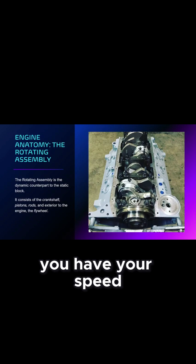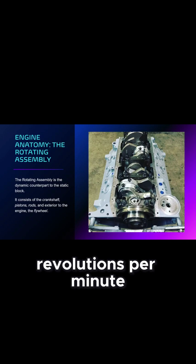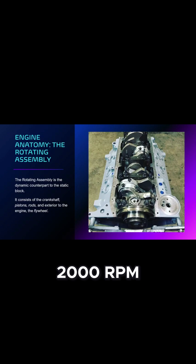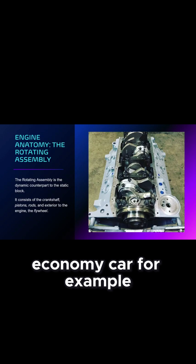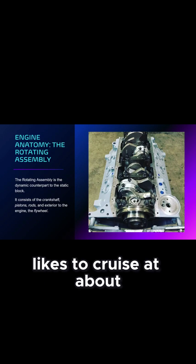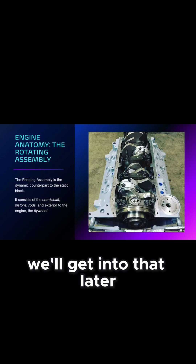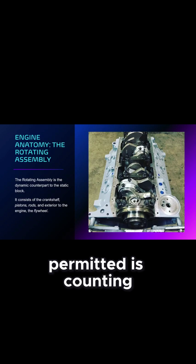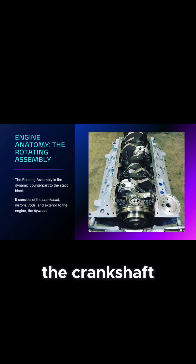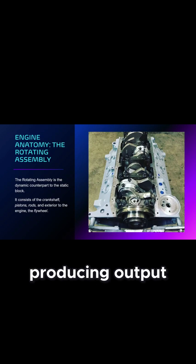If you've ever looked at your car's gauges while doing 60 miles an hour, there's another key dial: RPM — revolutions per minute. 2000 RPM is very different than 4000 RPM. A cruising RPM in most economy cars would be something like 1200. My seventh-gen Mustang likes to cruise at about 2000 — we'll get into that later. What RPM is counting is the revolutions of the crankshaft inside the block.